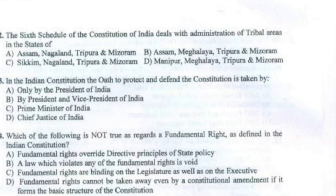Question 22: The sixth schedule of the Constitution of India deals with the administration of tribal areas in the states of Assam, Meghalaya, Tripura and Mizoram. Option B.